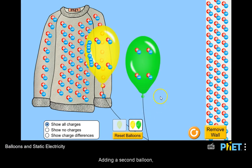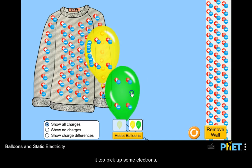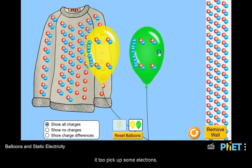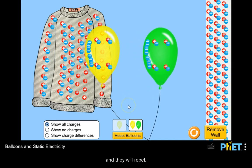But if we make another balloon pick up some electrons, now we have two balloons, both with net negative charge, and they will repel.